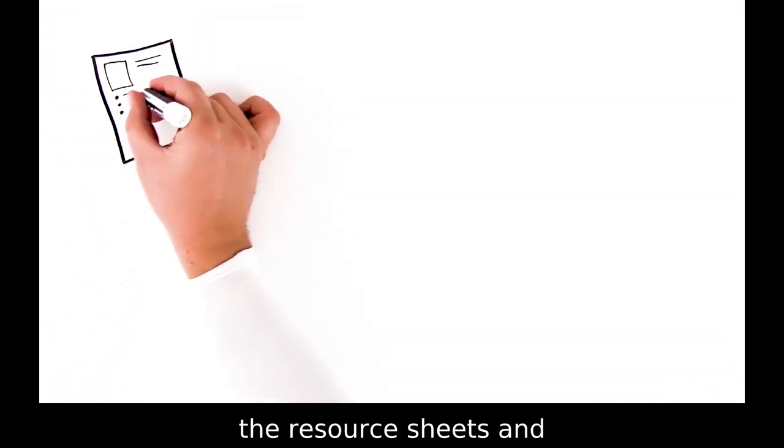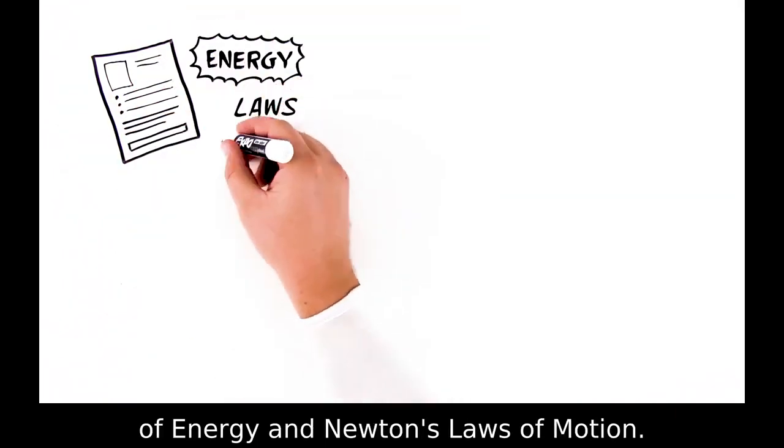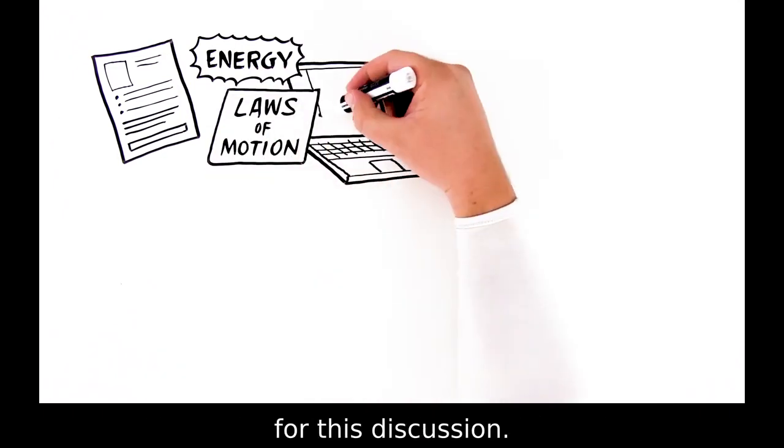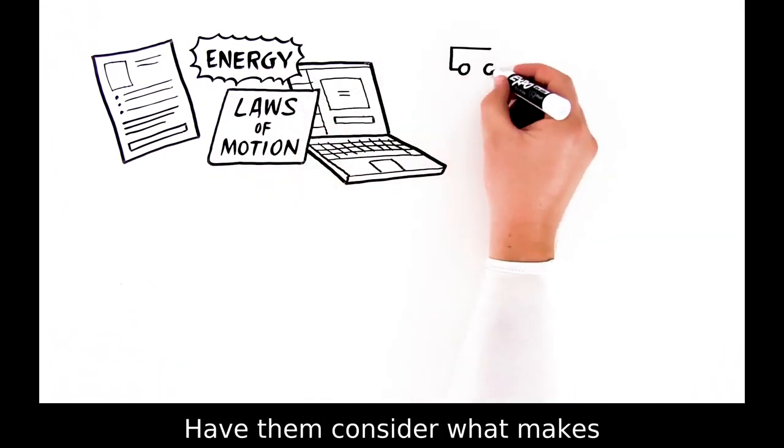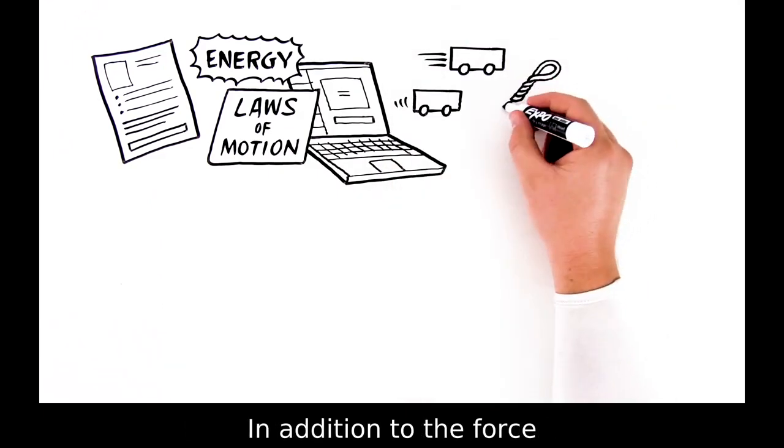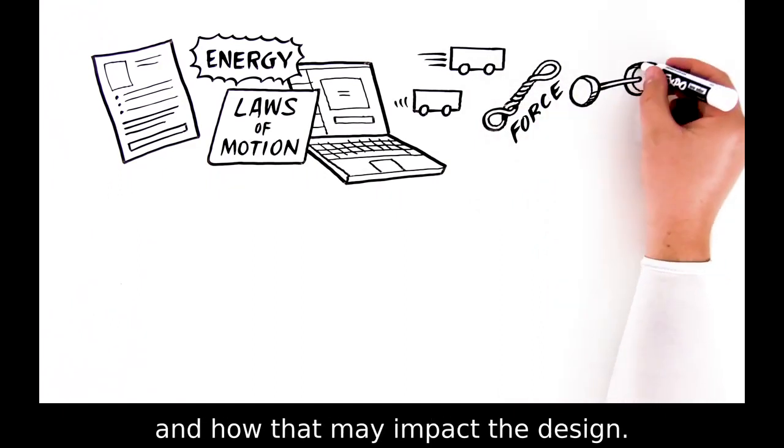Begin by showing students the resource sheets and discussing the scientific concepts of energy and Newton's laws of motion. You'll find the PowerPoint slides useful for this discussion. Have them consider what makes one car go faster than another. In addition to the force of the rubberband, they should consider friction and how that may impact the design.